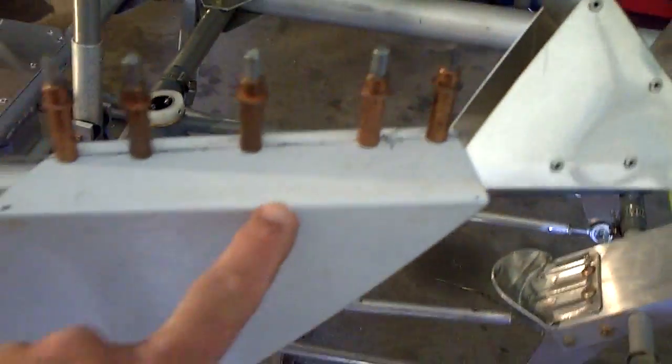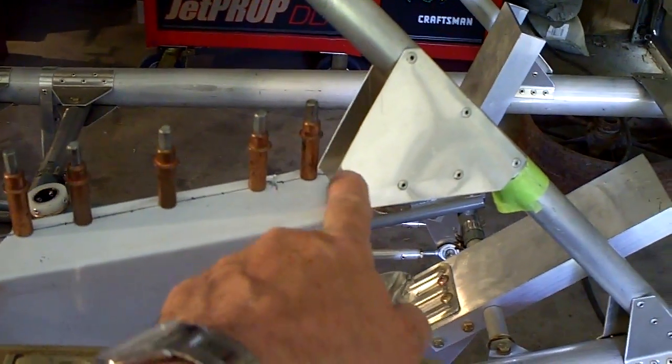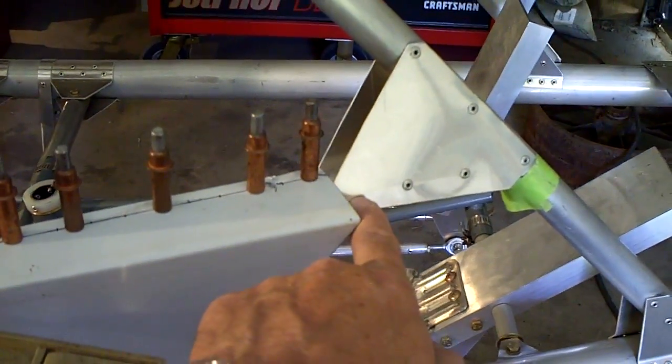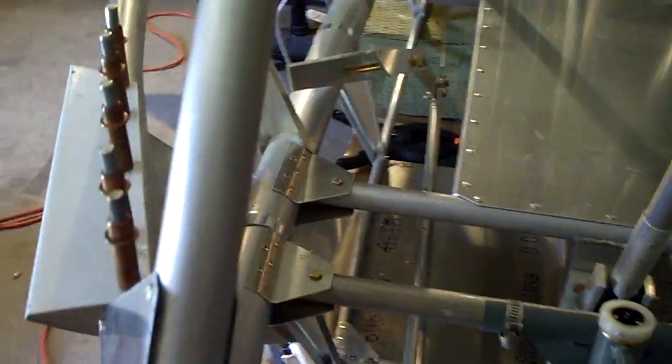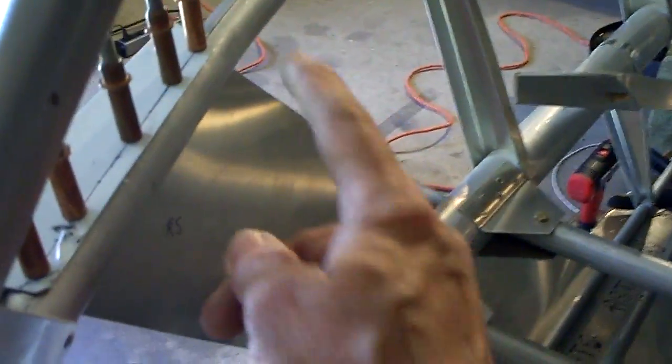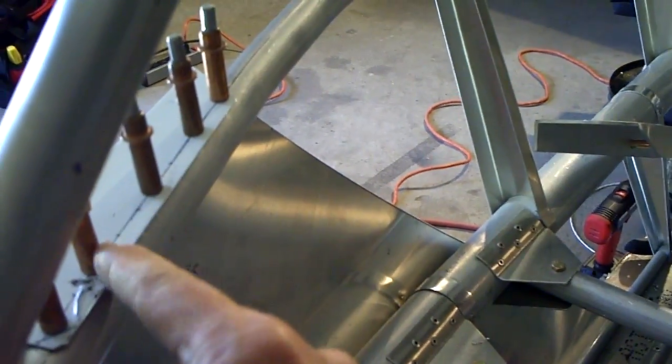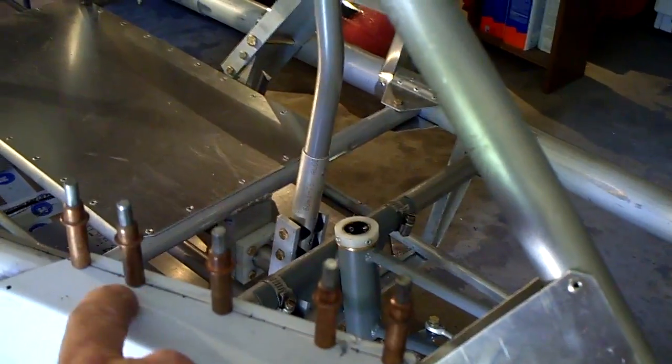Here I've installed the nose cone attach plate. Notice that the forward edge of it is right up against these gussets right here on the longeron tube. I also put it in such a manner so that the edge is flush along here. I then marked my edge marking which is about a quarter inch and evenly spaced out my holes one, two, three, four, and five holes.